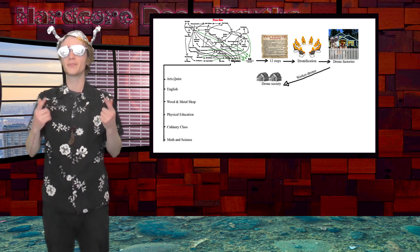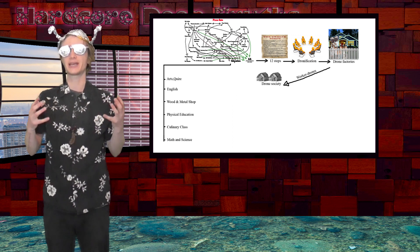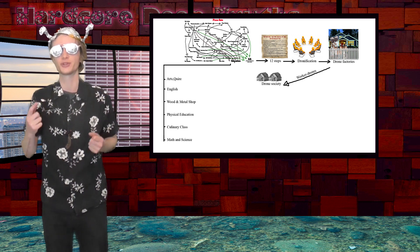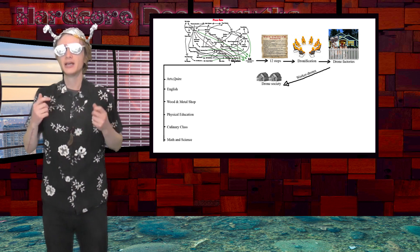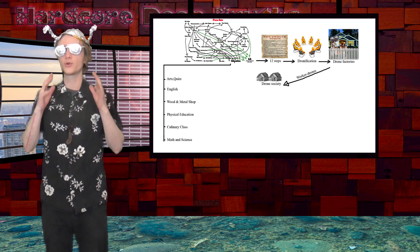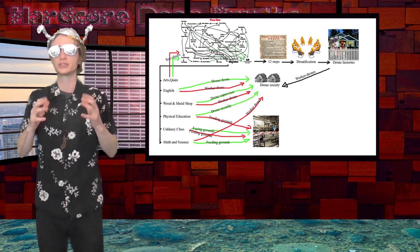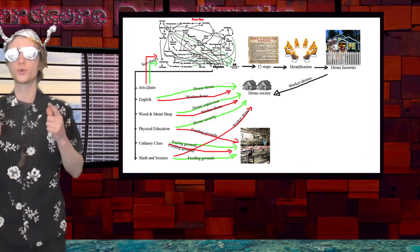We learn math and science so that the alien knows who to kill first. The top math and science students of course because they can make computer viruses and shit to knock out the alien mothership. These students are shipped directly to the alien feeding grounds. The rest are sent into drone worker camps.